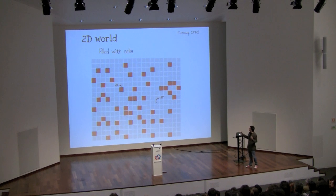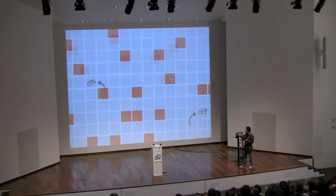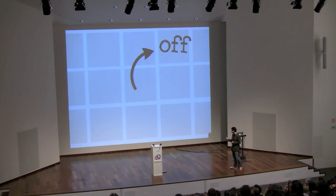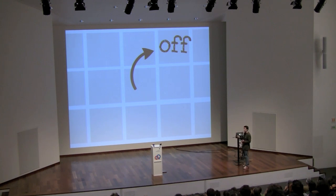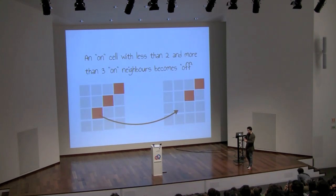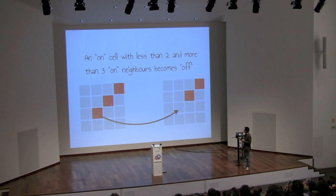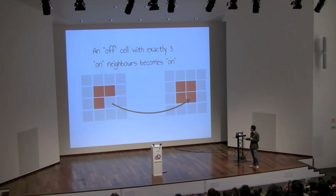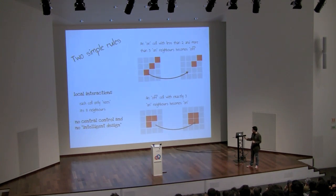Imagine a two-dimensional world made of cells — basically squares. The squares can be either on or off, and each square has eight neighbors: three on top, three at the bottom, one on each side. There are just two simple rules. When an on-cell has fewer than two or more than three on-neighbors, it switches off. And when an off-cell has exactly three on-neighbors, it switches on. Just these two rules — and they are only local interactions; each cell only sees its eight neighbors.